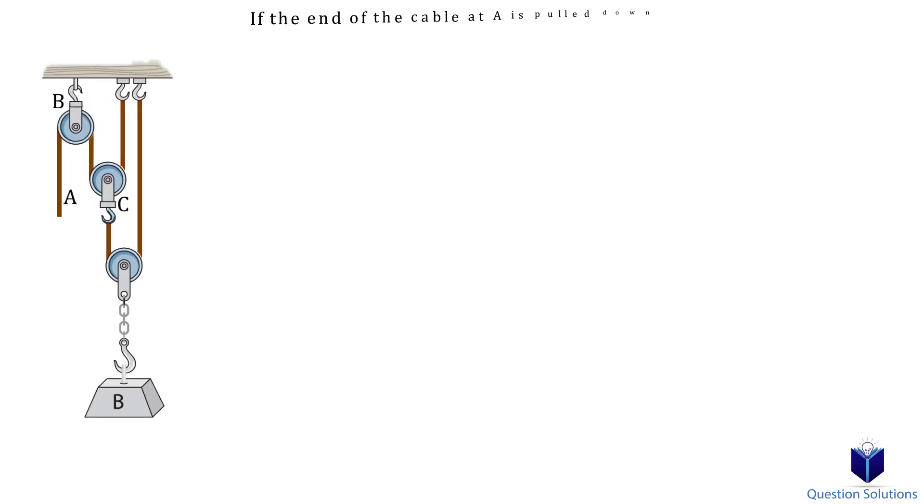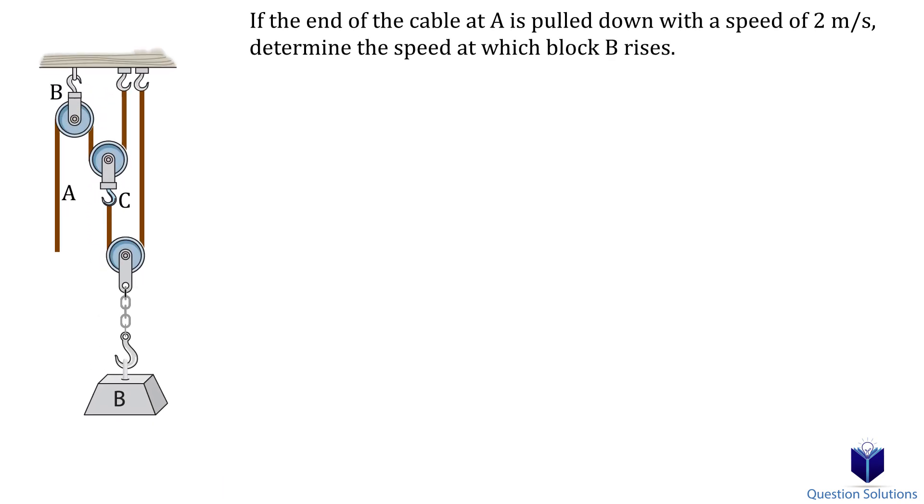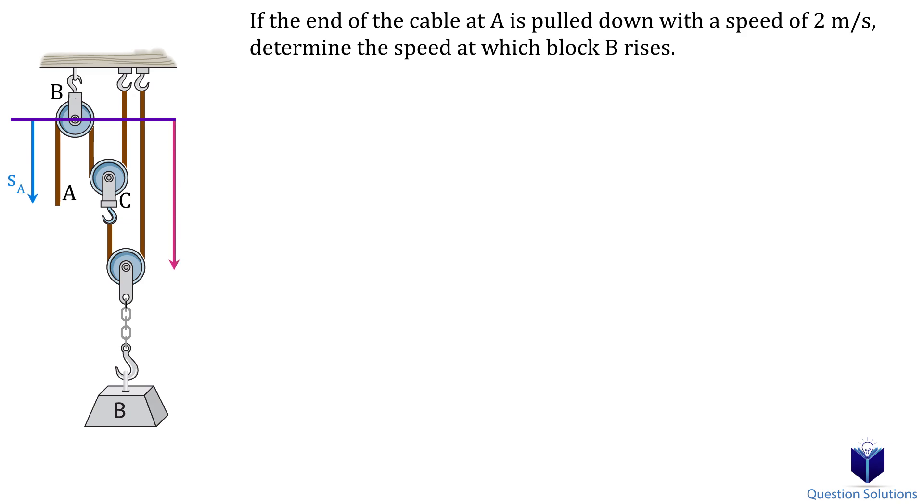Let's do another example. In this example we need to find the speed at which block B rises. So the first step is to draw a datum which we can place at the top pulley because it's fixed. Now we can draw the position coordinates. We have SA, SB and SC.